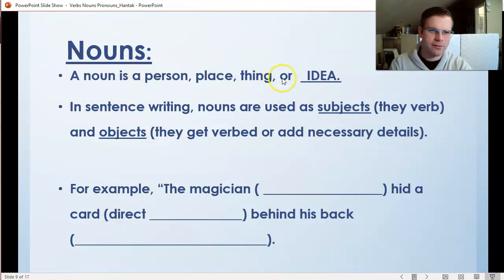A noun is a person, place, thing, or idea. Notice that idea is underlined there. In sentence writing, nouns are used as subjects, the things that do the verbing in a sentence. They can also be used as objects. They either get verbed or they add necessary details later on in the sentence. Generally, subjects come before the verb and objects come after, although there are a few exceptions to that rule.